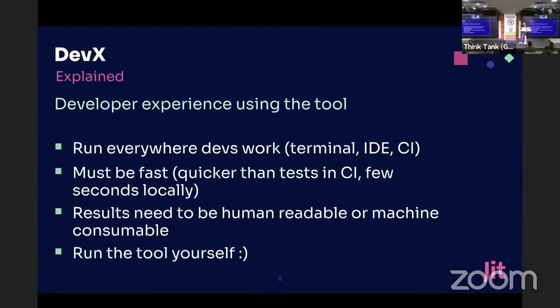From a developer experience perspective, you need to run everywhere that the developer works: the terminal, the IDE, and in the CI. The tool must be fast — quicker than testing in the CI, a few seconds locally — because we never want to hurt the dev velocity. If we hurt the dev velocity, we won't have any adoption, so it's just a waste of process. The results need to be human-readable or machine-consumable, because developers don't want to work hard to understand what we want from them. And the developer needs to be able to run the tool by themselves — they shouldn't be dependent on the security team or anyone else.